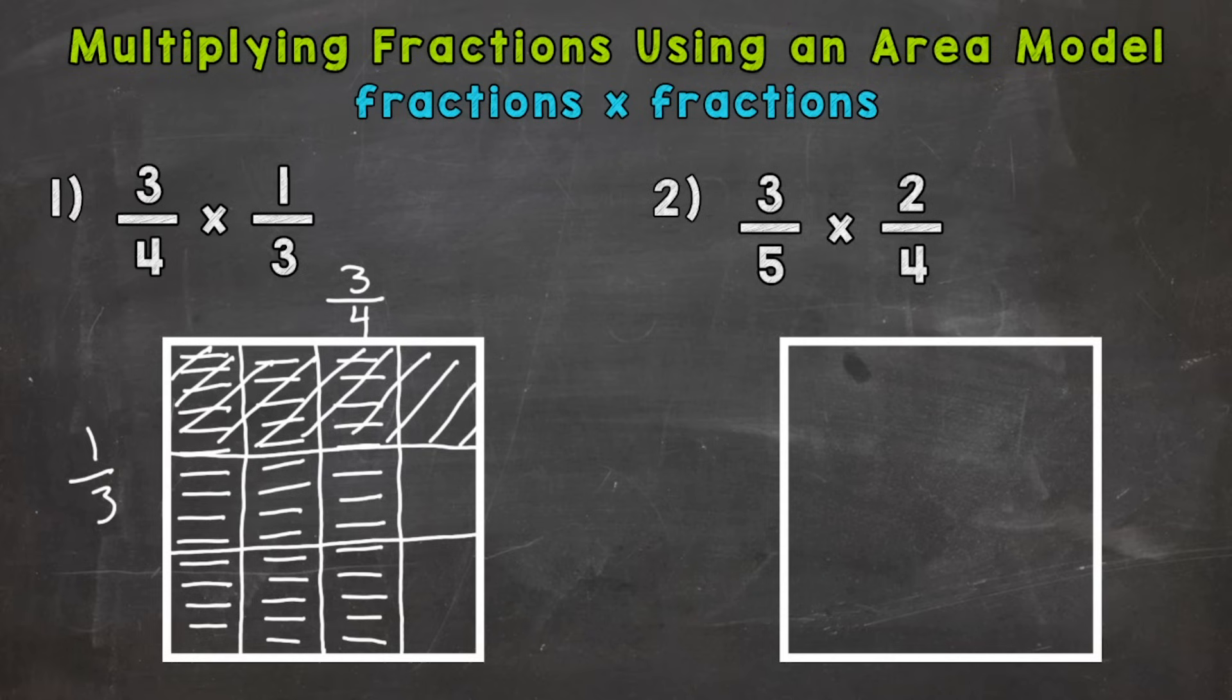So our area model is complete. Now we can get our answer from this. So we need to see how many sections overlap between one-third and three-fourths. And it's these three sections here. So three total sections overlap. That's going to be the numerator in our answer.